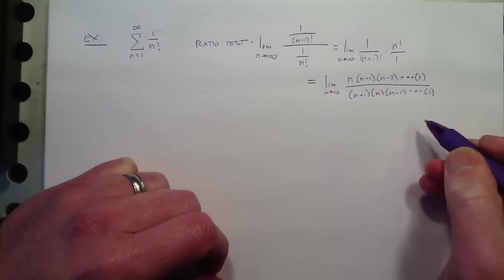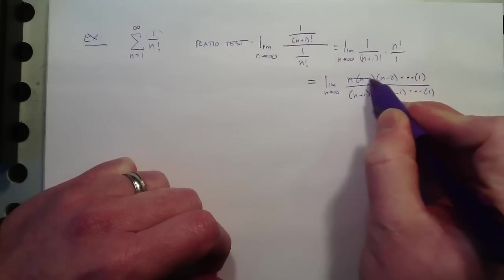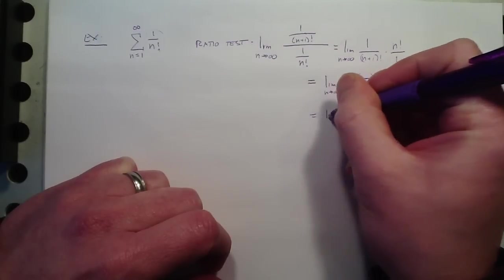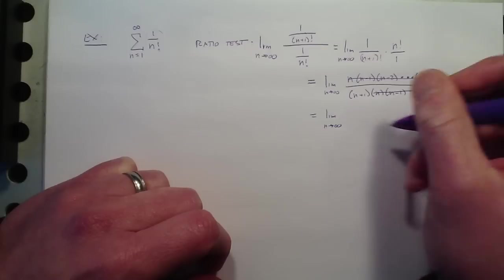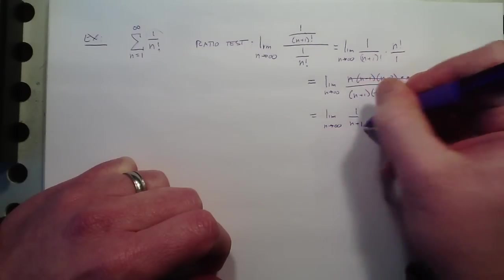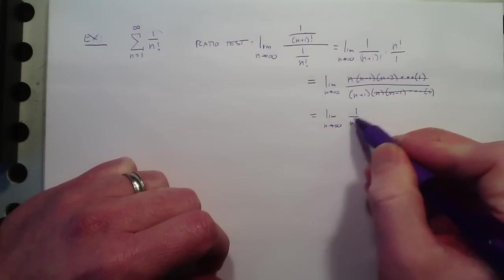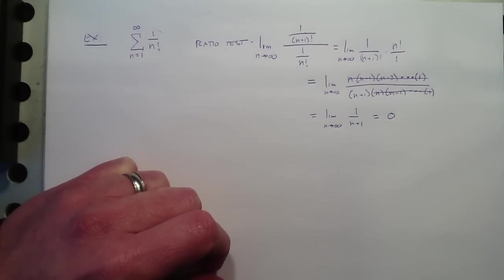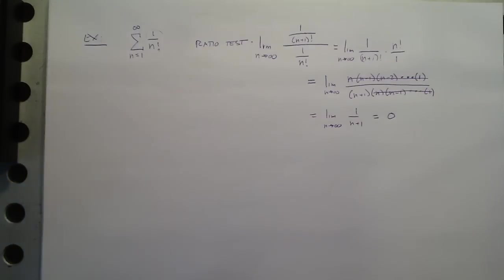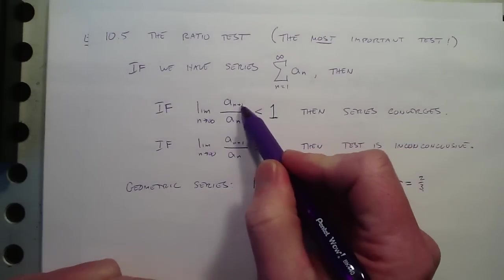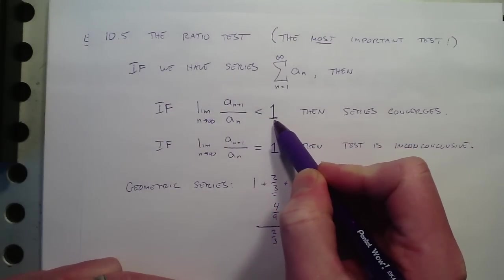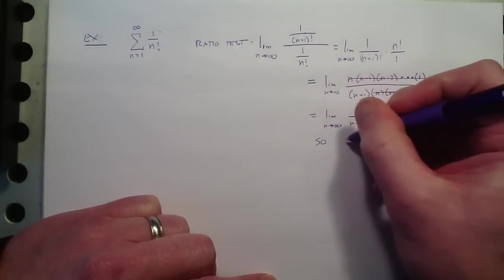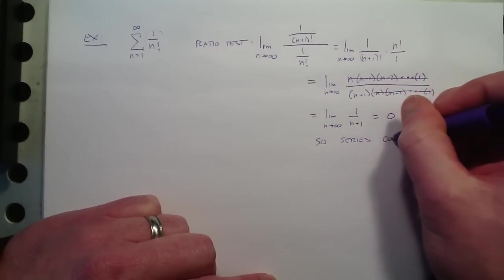All right? And look at what happens since it's all multiplication. All of these n and all the way down cancels with all of those so that's just equal to the limit as n approaches infinity of 1 over n plus 1 and as n approaches infinity 1 over n plus 1 approaches 0. So what does that mean? The test says if that limit is less than 1 and 0 is less than 1 then the series converges. So the series converges.